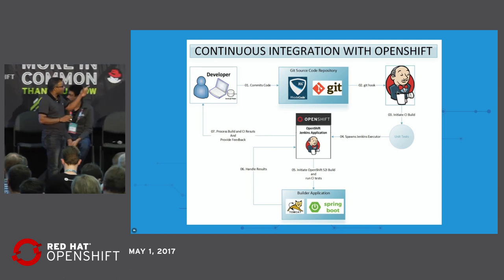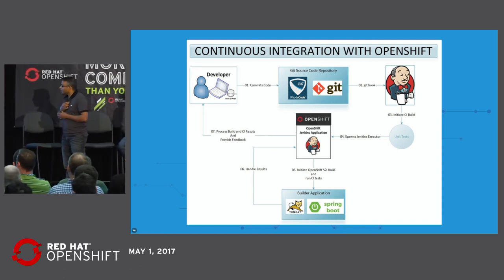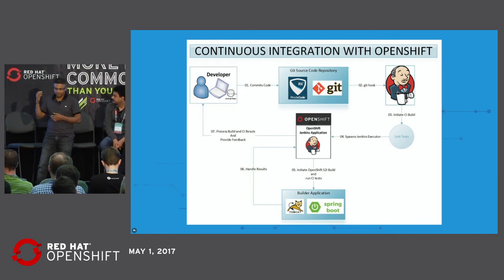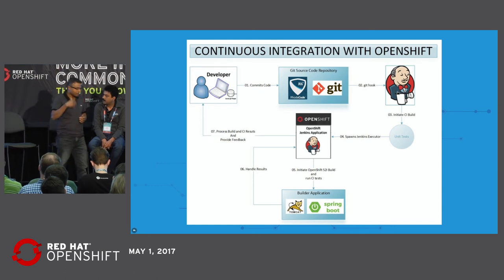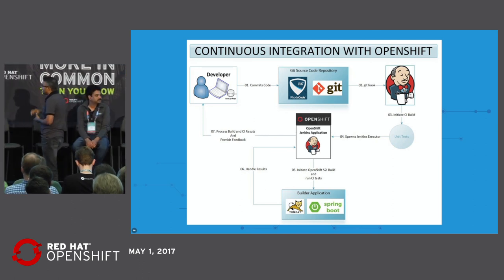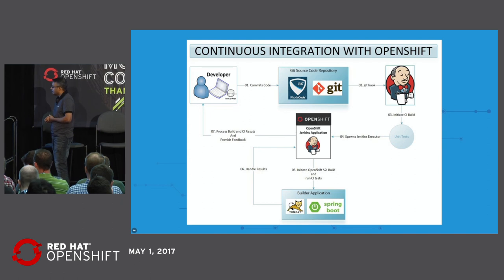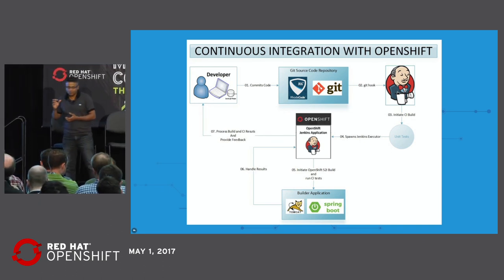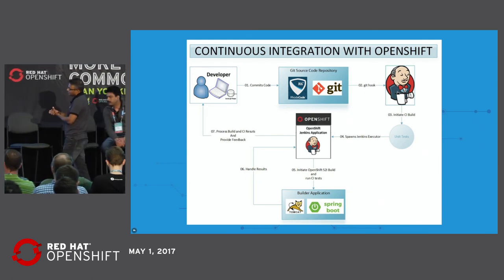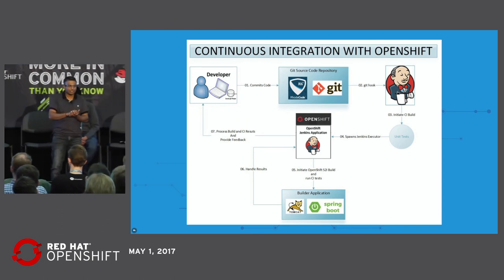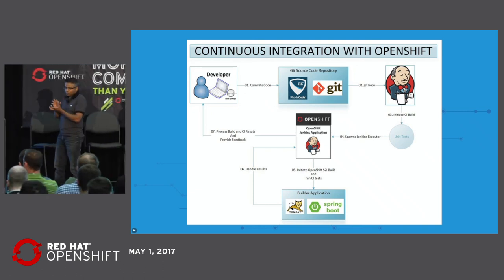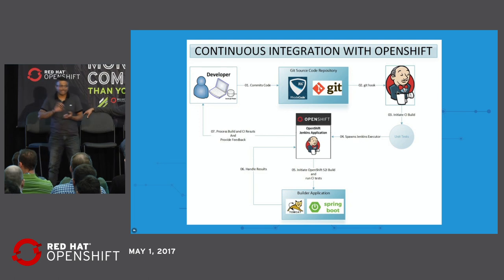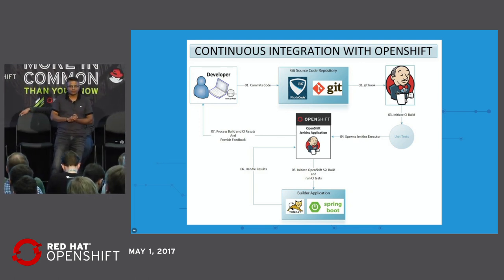Let me walk you through continuous integration with OpenShift. It all begins when a developer commits code to the Git repository. Using webhooks, the Jenkins server is able to initiate the build — the source is compiled, unit tests are run, and if all is well, we spawn off a Jenkins executor. This Jenkins executor initiates the OpenShift S2I build, which builds our application source and puts it on top of our builder image — either Spring Boot or Tomcat based on our needs — to create the application Docker image. This output image stream is then deployed into OpenShift and we run functional tests on it. The results of the functional tests and unit tests are provided as instant feedback back to the developer. That is how we achieve continuous integration.